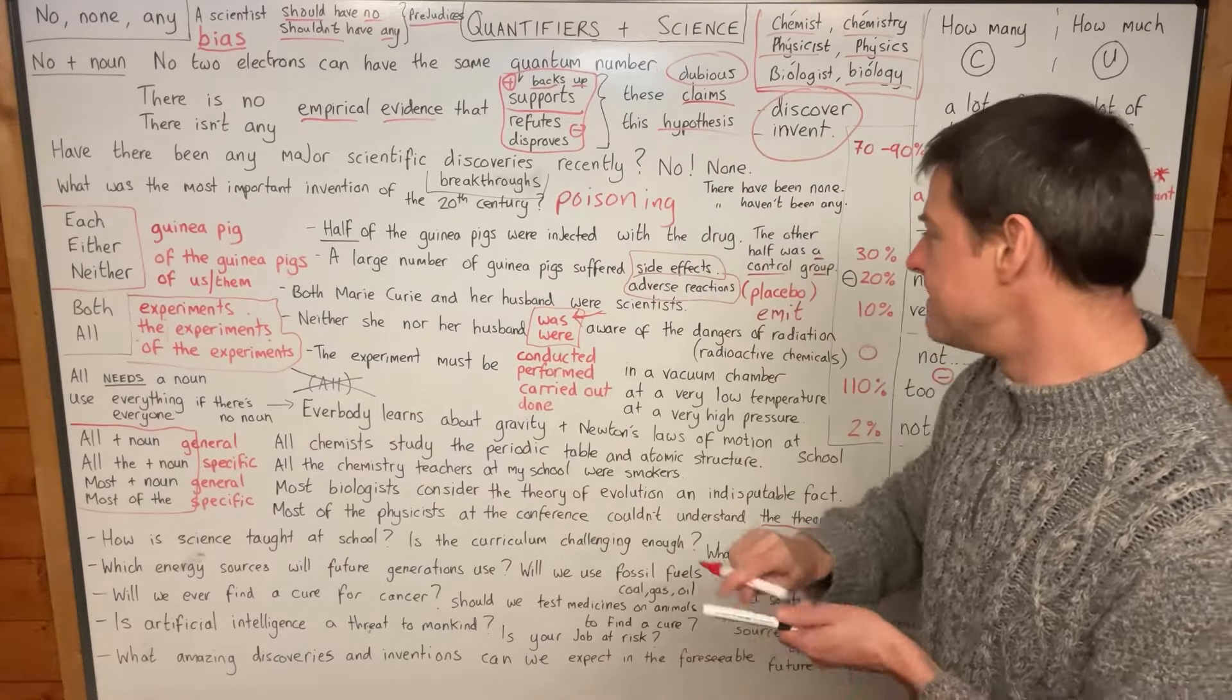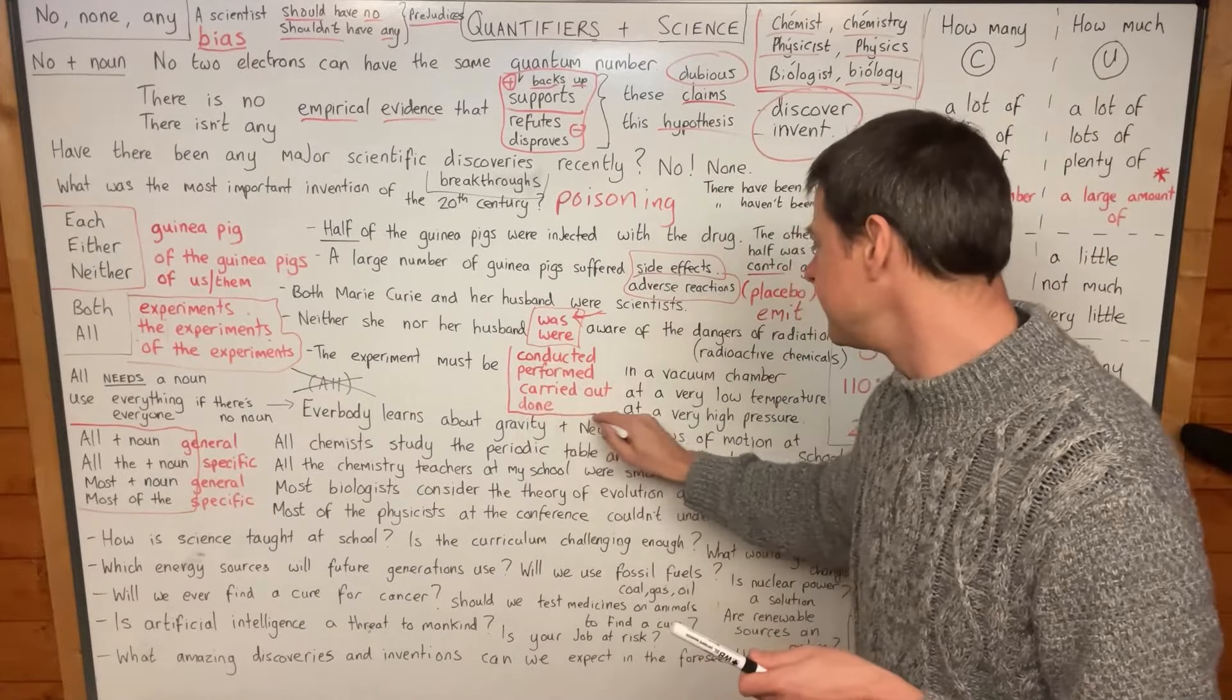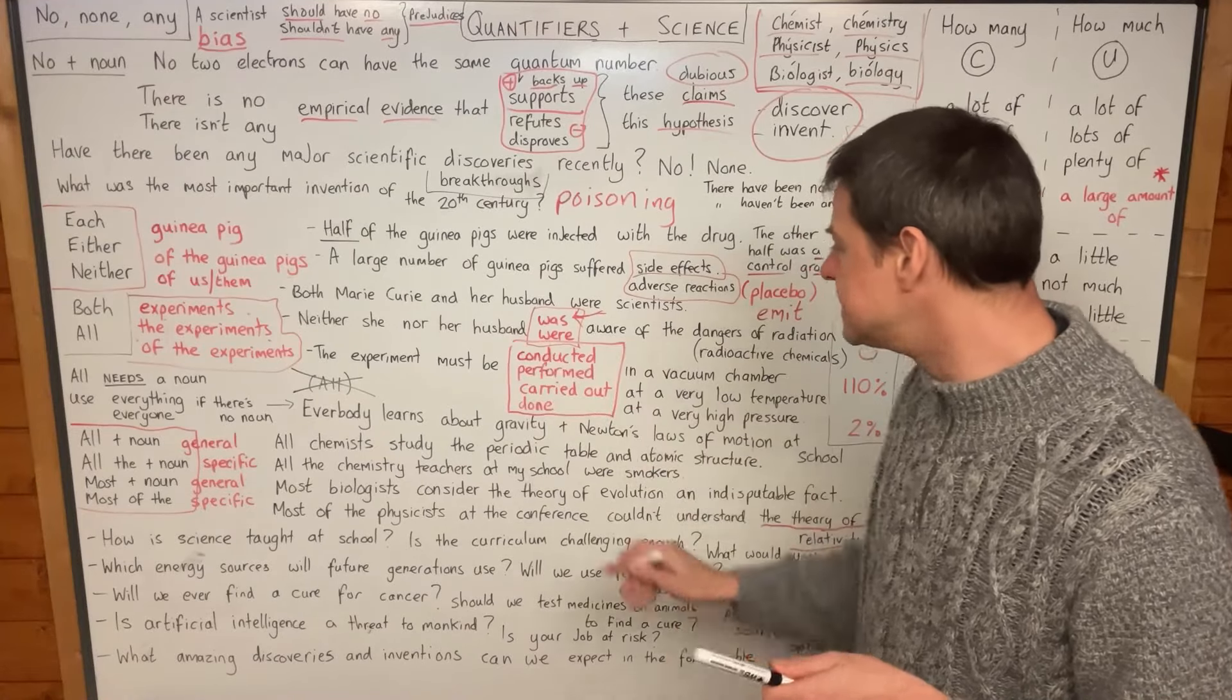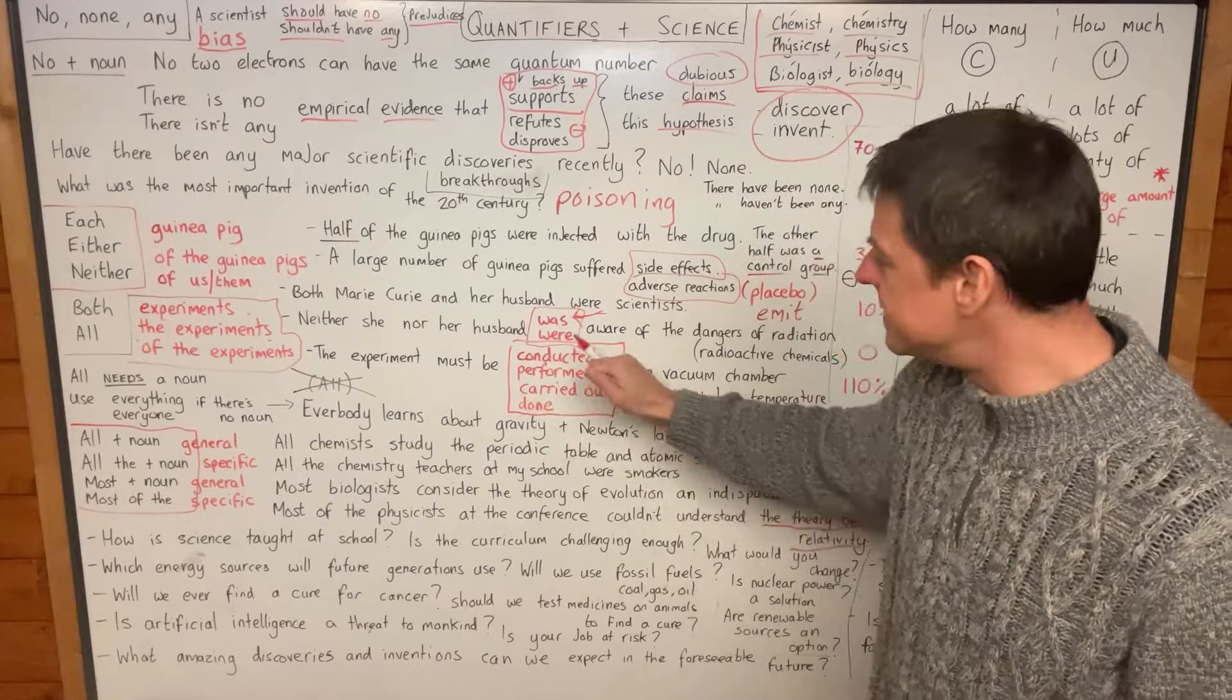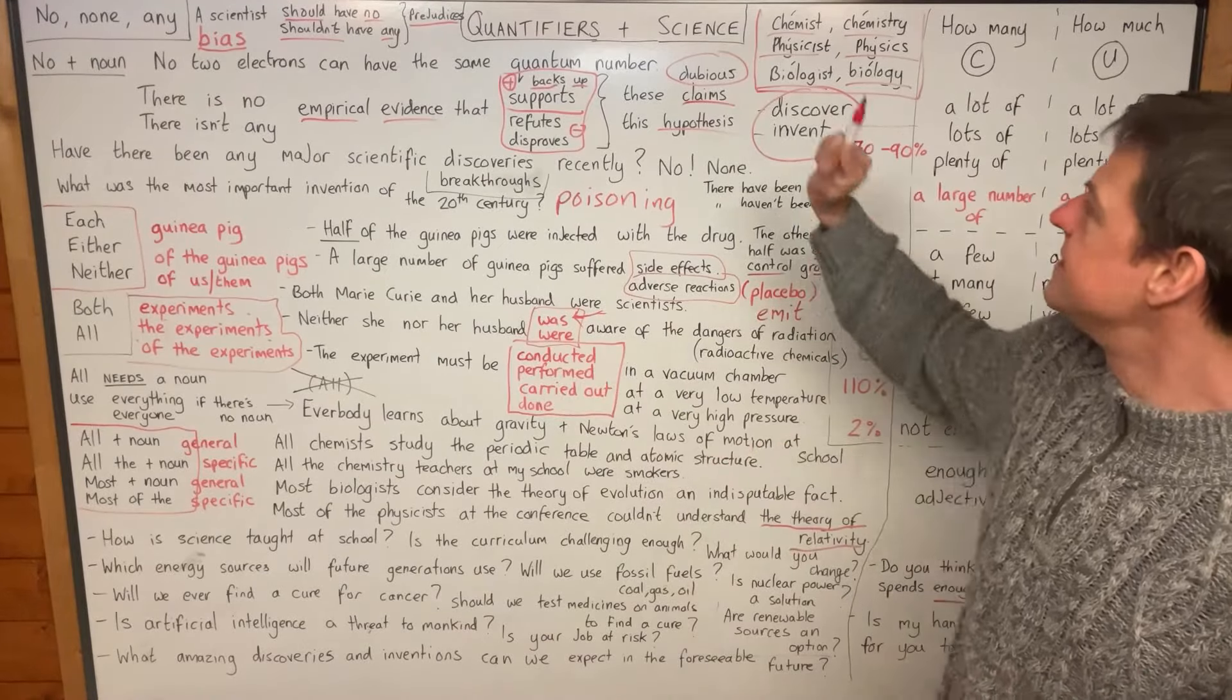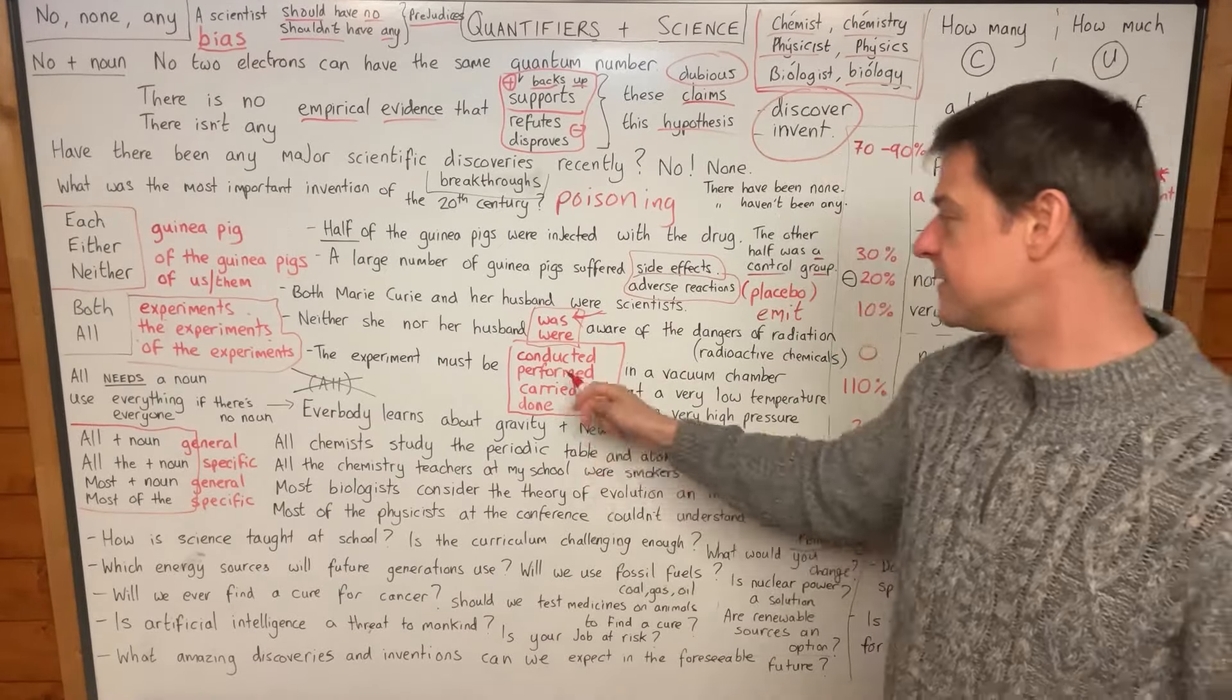The experiment must be conducted, performed, carried out, or done. You do an experiment, you carry out an experiment, you perform an experiment, you conduct an experiment. This is what scientists do - they do experiments.